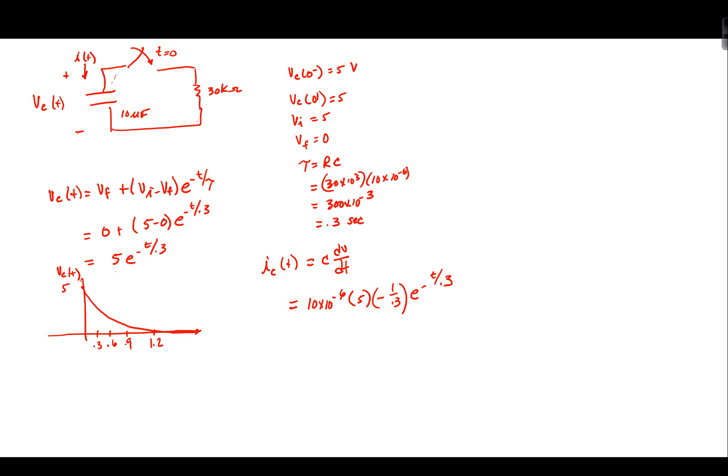We get the calculator to do this, and we have 5 times 10 to the minus 6 divided by 0.3. That equals the constant out in front, then, is equal to negative, there is a minus sign, negative 1.7 times 10 to the minus fourth.